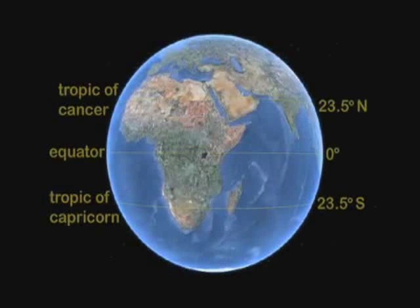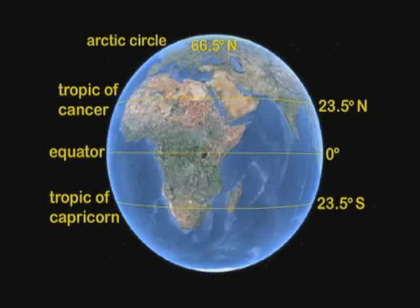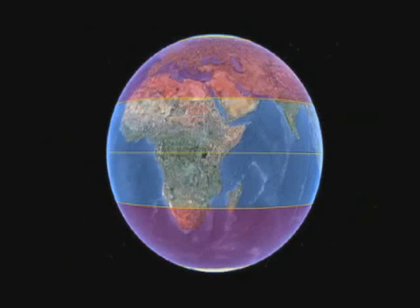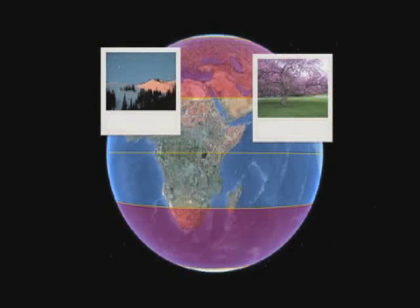The Arctic Circle lies at 66 and a half degrees north, and the Antarctic Circle lies at 66 and a half degrees south. The area of the Earth between these parallels and the tropics is characterized by four distinct seasons.